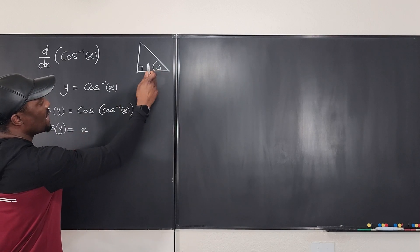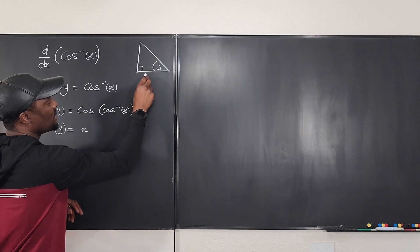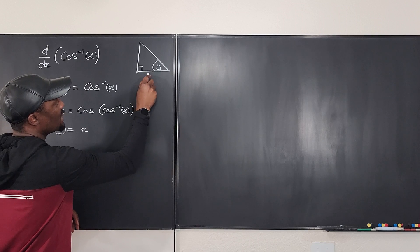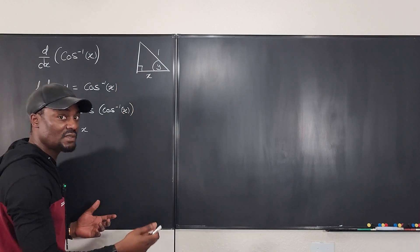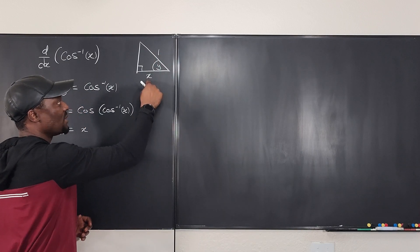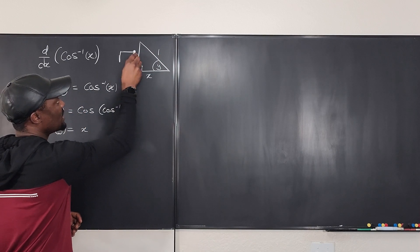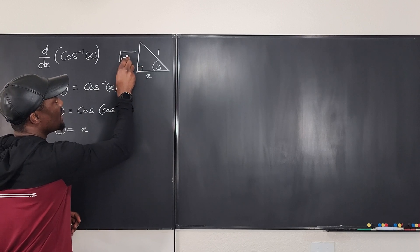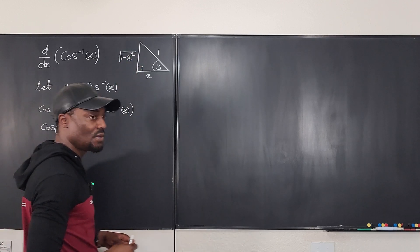So this is cosine, that's x over one. And then we find this part using Pythagorean theorem, that means the square of this minus the square of this to take the square root. So this has to be one minus x squared. So that's what you've got as your triangle.